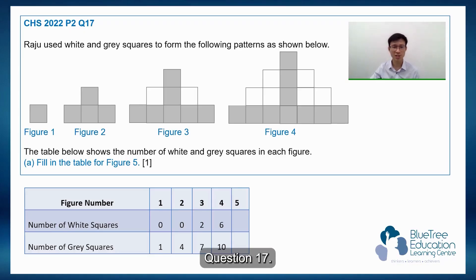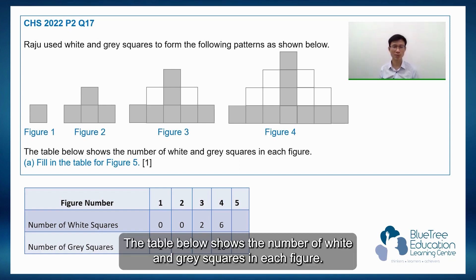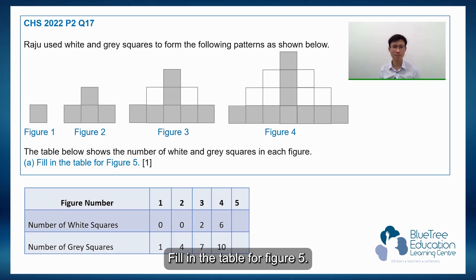Question 17. Raju used white and gray squares to form the following patterns as shown below. The table below shows the number of white and gray squares in each figure. Fill in the table for figure 5.